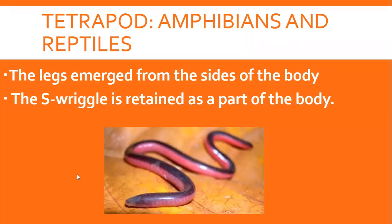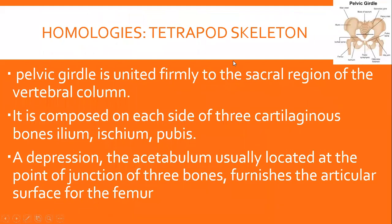تمام tetrapods — amphibians، reptiles، birds اور mammals — کے skeleton میں homologous similarity بہت ہے۔ اس لیے ان سب کے locomotion کے pattern میں تھوڑے بہت differences ہیں، ورنہ skeleton میں کافی زیادہ similarity ہے۔